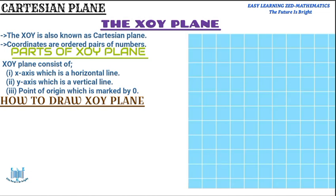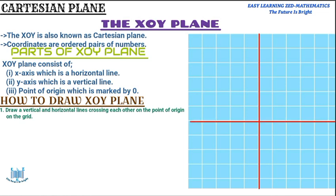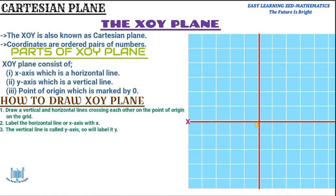First, I draw a vertical and horizontal line crossing each other at the point of origin on the grid. I'll draw the vertical line and then the horizontal line, and indicate the point of origin by marking it with zero. Then I'll label the horizontal line as the X axis by writing X, and label the vertical line as the Y axis by writing Y on top.